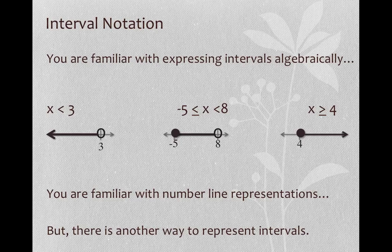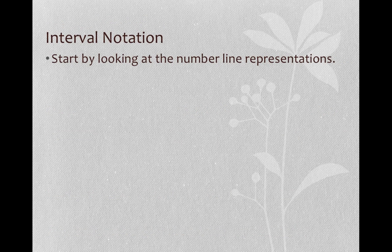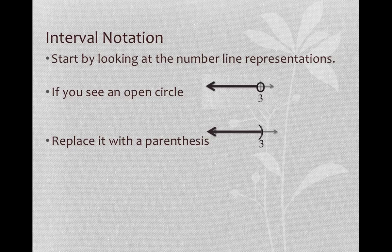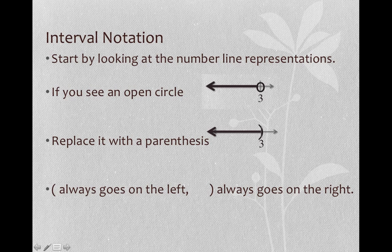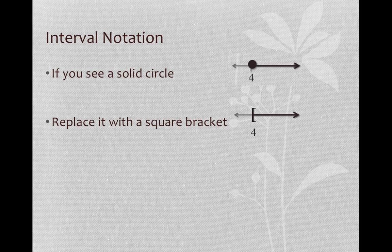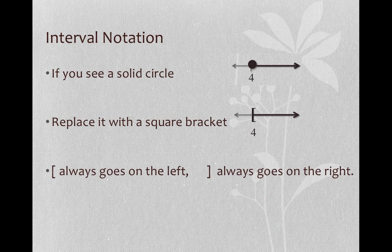There is another way to represent these intervals, and that's what interval notation is. If you see an open circle, you're going to replace it with a parenthesis — open circle and parenthesis are equivalent. The parenthesis that opens the interval is always on the left, and the parenthesis that closes the interval is always on the right. If you see a solid circle, then you replace it with a square bracket. A closed circle is equivalent to a square bracket. The square bracket that opens the interval always goes on the left, and the square bracket that closes the interval always goes on the right.